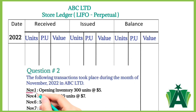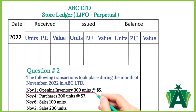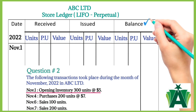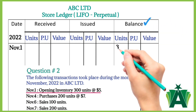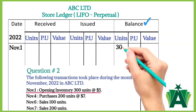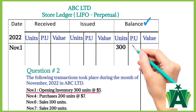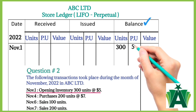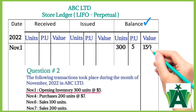November 1st: opening inventory of 300 units at $5 per unit. This transaction will be recorded in the balance column — 300 units in the units column, $5 per unit, and the total value is $1,500.